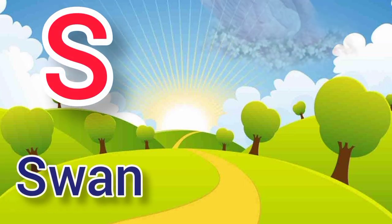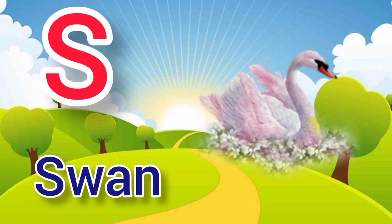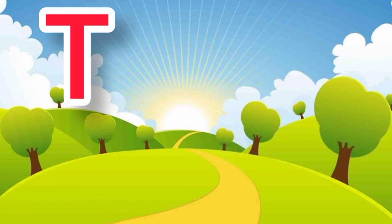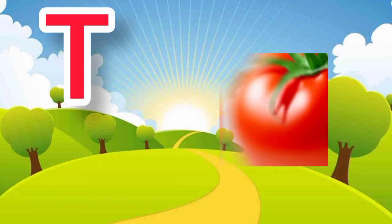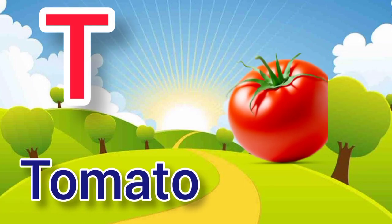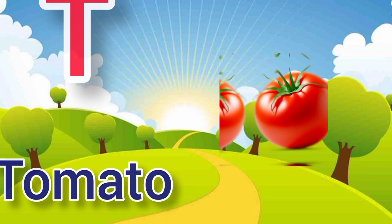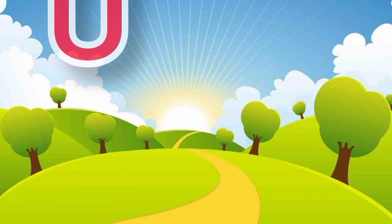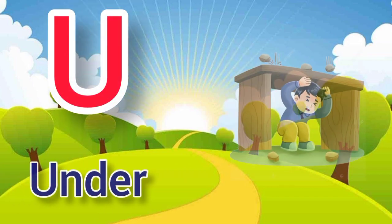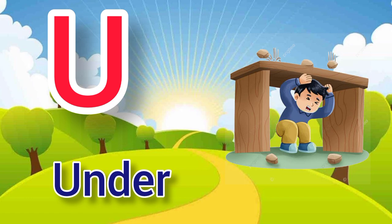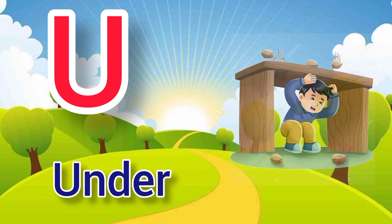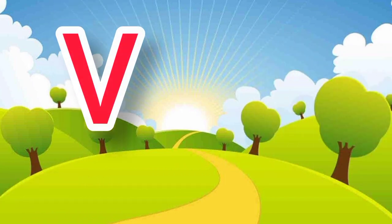S. S for swan, swan means huns. T. T for tomato, tomato means tomato. U. U for under, under means neechay.